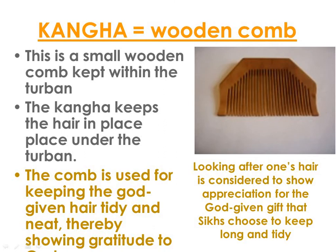The Kanga is a small wooden comb kept within the turban. It keeps the hair in place under the turban and is used for keeping the hair tidy and neat, thereby showing gratitude to God. Looking after one's hair is considered to show appreciation for the God-given gift that Sikhs choose to keep long and tidy. As mentioned, sometimes Sikhs may have a drawing of the Kirpan on the comb, which would be acceptable as representing two of the five Ks.